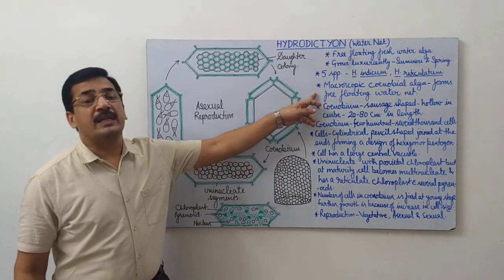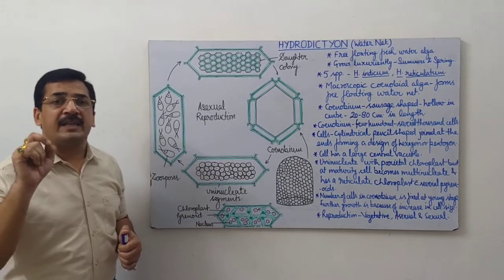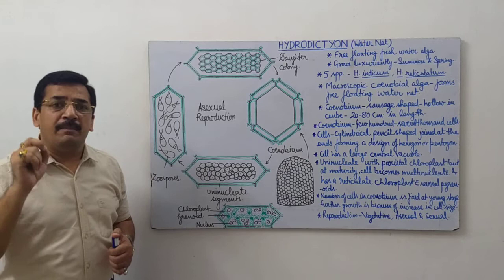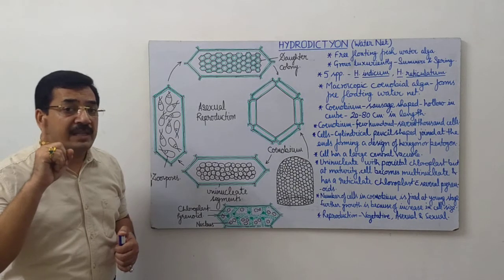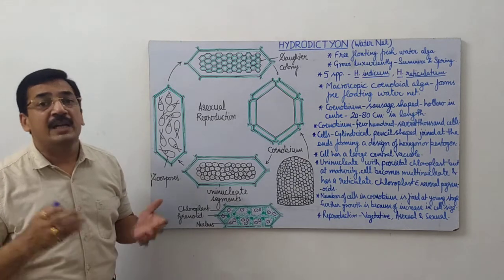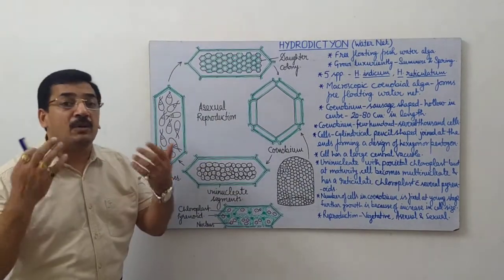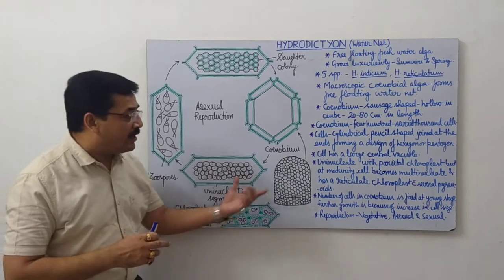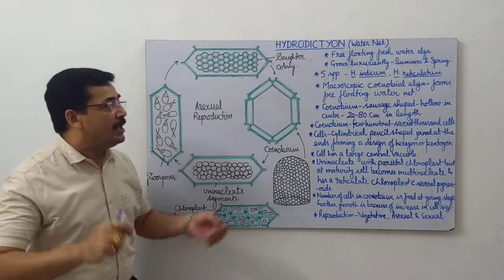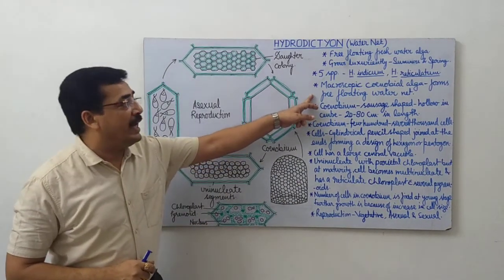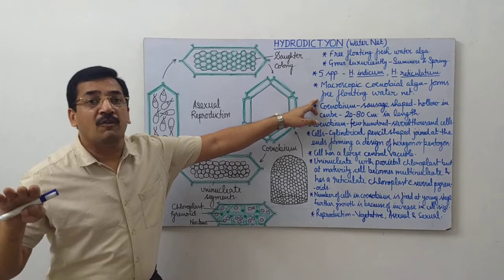It is a macroscopic coenobial alga. Coenobium is a colony in which the number of cells is definite. So Hydrodictyon is a macroscopic coenobial alga that forms free floating water net on the surface of water bodies.